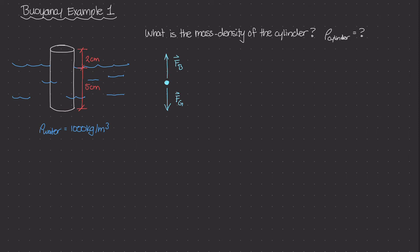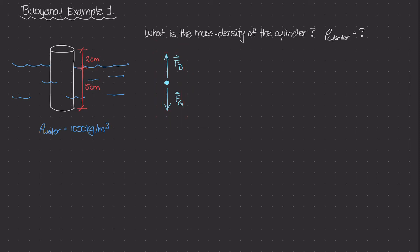That's a very important concept: buoyant force is the force of the displaced liquid, not of the actual object submerged within that fluid. We know that this cylinder is in static equilibrium, so summing forces in the y direction, the magnitude of F sub B must equal F sub G.